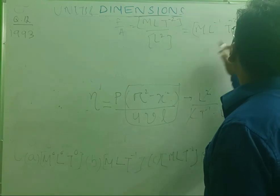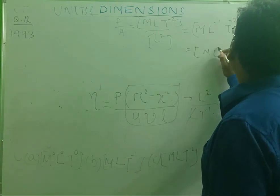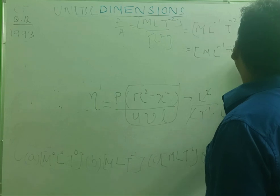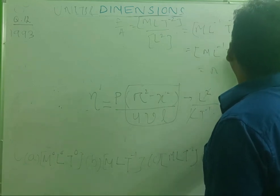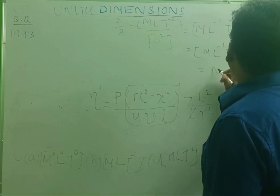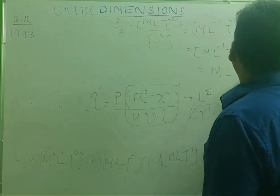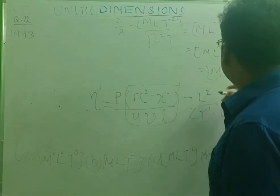We will multiply it here: ML minus 1 T minus 1 pressure into T. So this will be T minus 2. So this is ML minus 1 T minus 1.